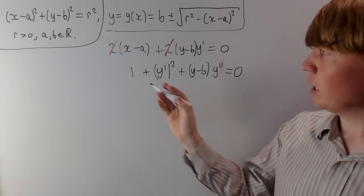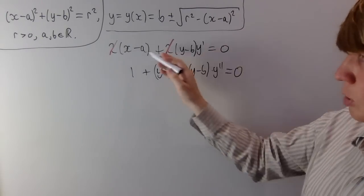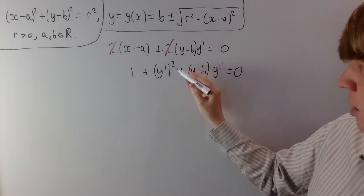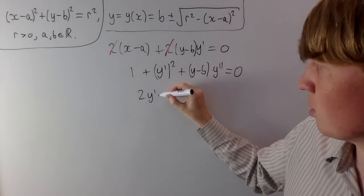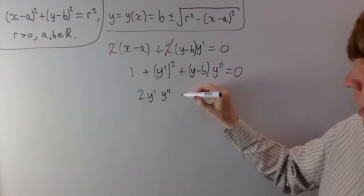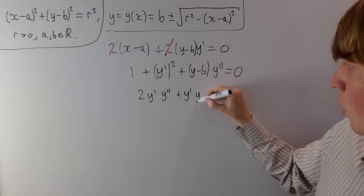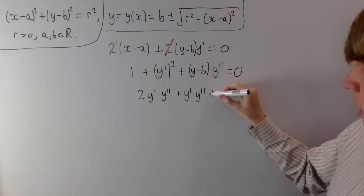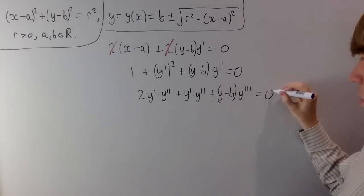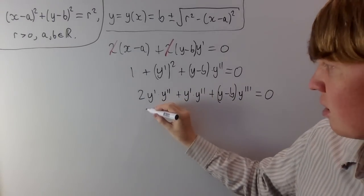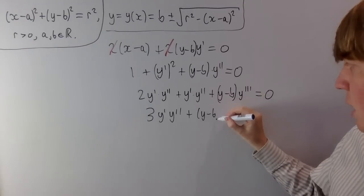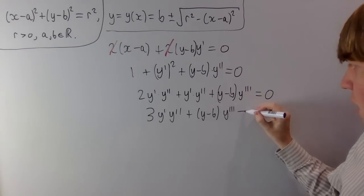We still can't quite eliminate all constants — we could get rid of b but not a. So let's differentiate one more time. The 1 disappears; differentiating using the product rule gives 2 times dy dx times the second derivative. Applying the product rule again gives y dash plus y dash times y dash dash, then differentiating the remaining term gives plus y minus b times the third derivative equals 0. Collecting the two terms gives 3 y dash y dash dash plus y minus b times y dash dash dash equals 0.